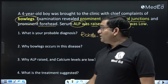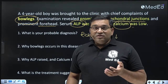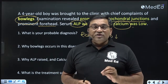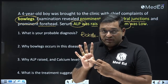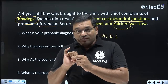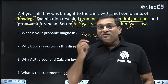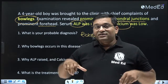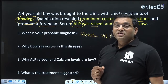Prominent and widened costochondral junctions are known as rachitic rosary — a feature of rickets. There is also a prominent sternum. Along the insertion of the diaphragm, there is a horizontal sulcus known as Harrison's sulcus. Pulling of the ribs because of the diaphragm gives this horizontal sulcus, also called Harrison's sulcus.